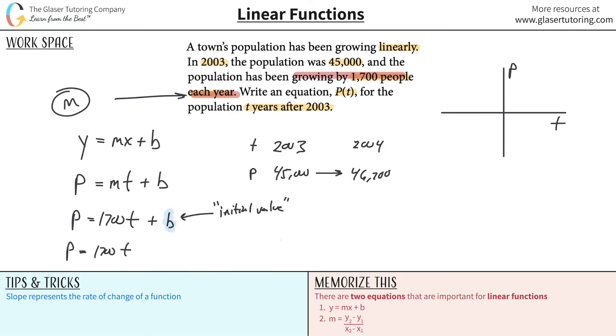Now watch: 1,700 times t plus 45,000. If this is the equation and I want to find the population in 2004, that's one year after 2003. If you plug in one here, it's 1,700 times one which is 1,700, and then add to that 45,000. What would we get? We would get 46,700, exactly what we would have expected.